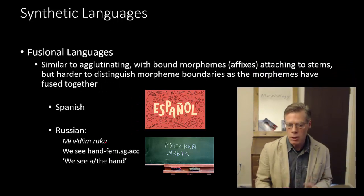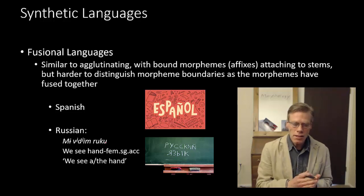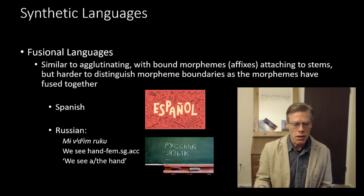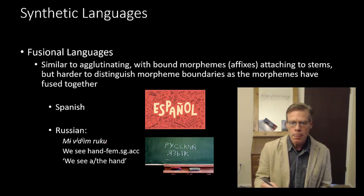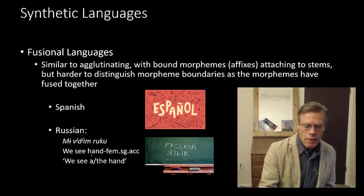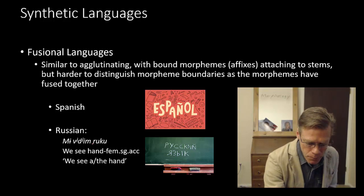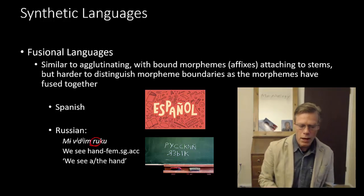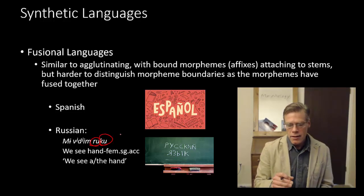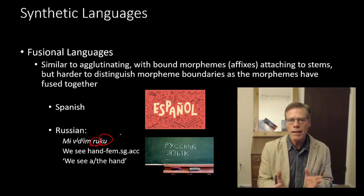Fusional languages are kind of similar in that you've got plenty of bound morphemes and affixes attaching to stems. But the thing is, it's harder to distinguish morpheme boundaries, as the morphemes have, in a sense, fused together. Romance languages are good examples of fusional languages, as are some of the Slavic languages like Russian. Here's an example where we look at the feminine singular accusative of 'hand.' The root is probably 'ru' and the affix is probably 'cu,' but that affix has wrapped into it many different functions.